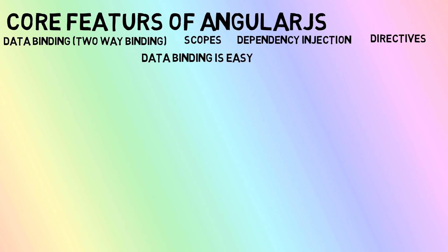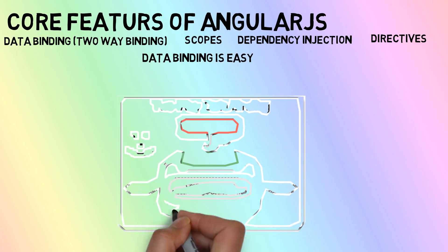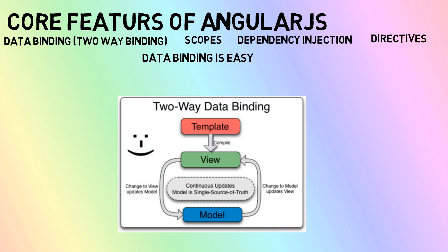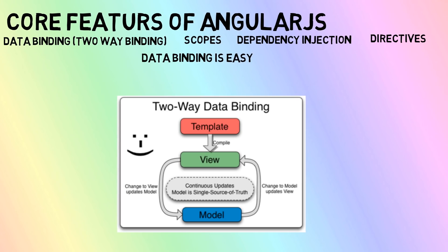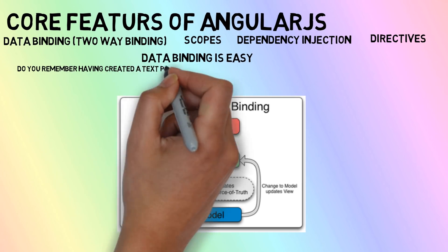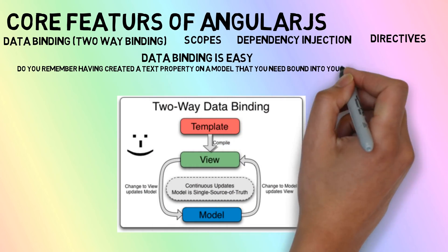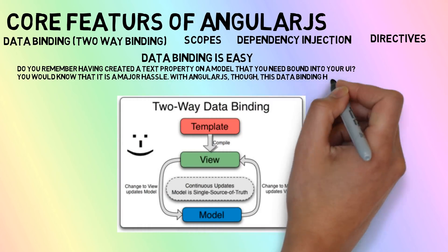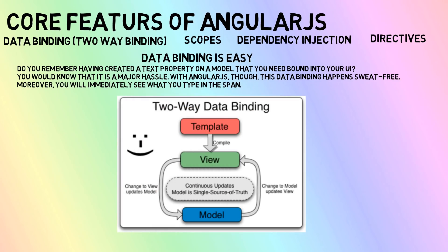In earlier times, when we created a text property, we needed to bind it with the view, and whenever there was a change in the model we needed to go to the view and change the view property. There was no synchronization between both of them. AngularJS provides us two-way binding, so there is proper synchronization between the model and the view. When the model changes, the view reflects the change, and when the data in the view changes, the model is also updated automatically.